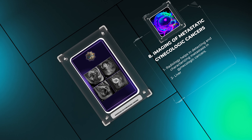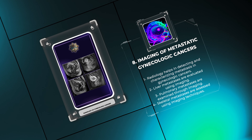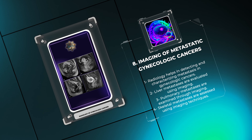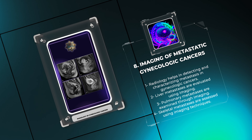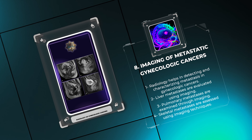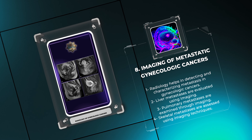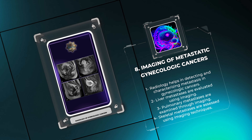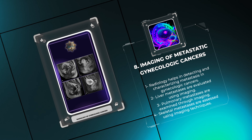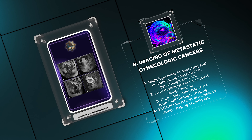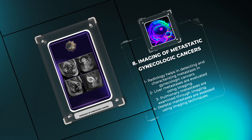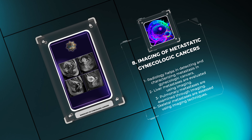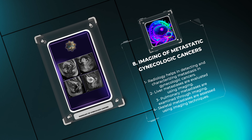Metastatic spread is a significant concern in gynecologic cancers. Radiology helps in detecting and characterizing metastasis in various organs, such as the liver, lungs, and skeletal system, aiding in treatment planning and monitoring disease response. Imaging evaluation addresses liver metastases, pulmonary metastases, and skeletal metastases in the context of gynecologic malignancies.